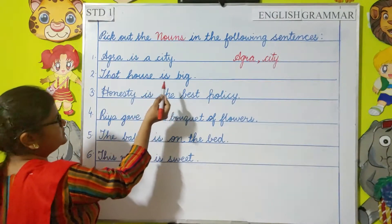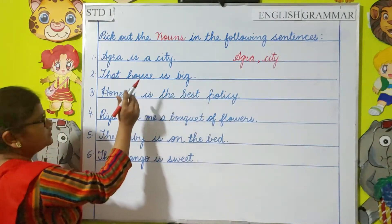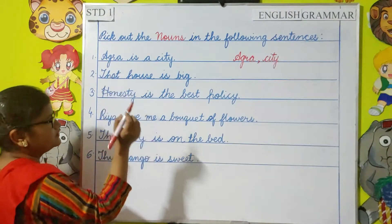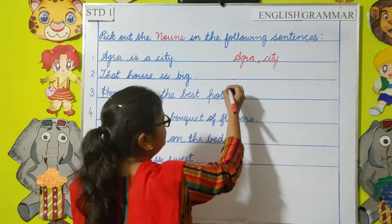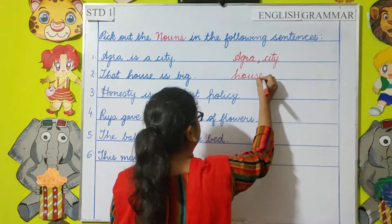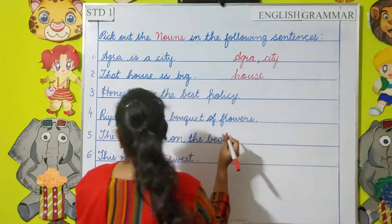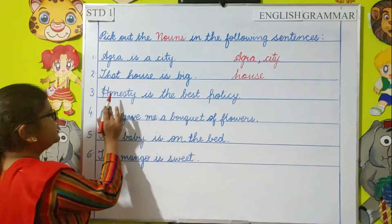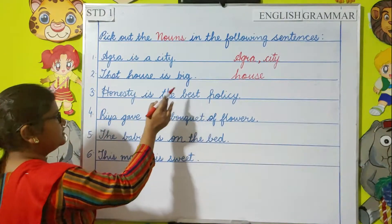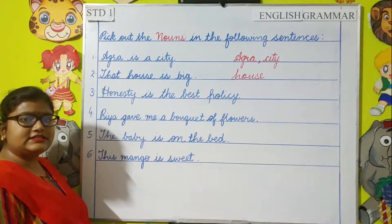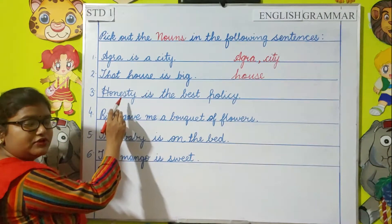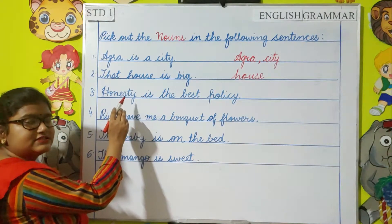Next: that house is big. Which is the noun in the sentence? House. It is a common noun. Number three: honesty is the best policy. Speak out the noun from this sentence. Honesty. This is an abstract noun as it is a quality.